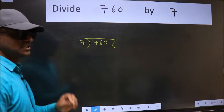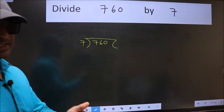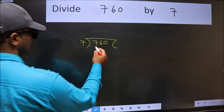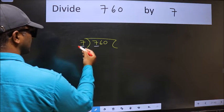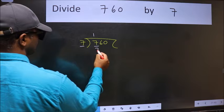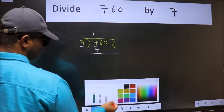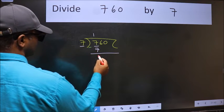This is your step 1. Next, here we have 7 and here 7. When do we get 7 in the 7 table? 7 once 7. Now we should subtract. We get 0.